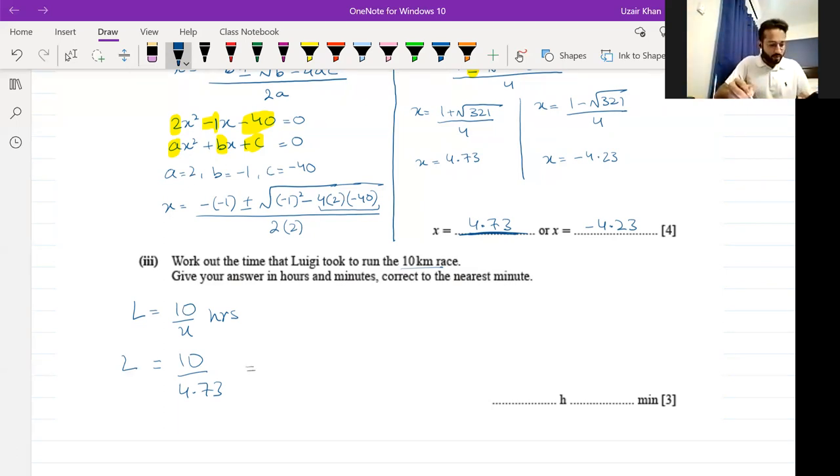The answer is 2.11 hours, but they want us to give our answer in hours and minutes correct to the nearest minute. Let's convert the 0.11 into minutes. For that, we will multiply it with 60. The answer for that is 6.6 minutes, and the nearest minute will become 7. So 2 hours and 7 minutes is the complete time taken by Luigi. That completes this question.